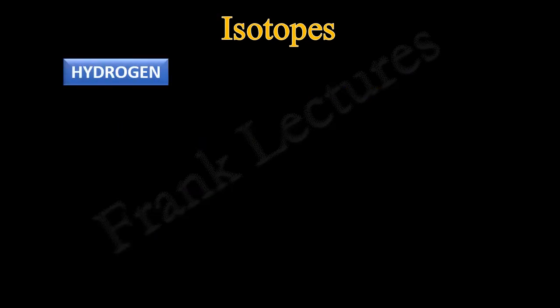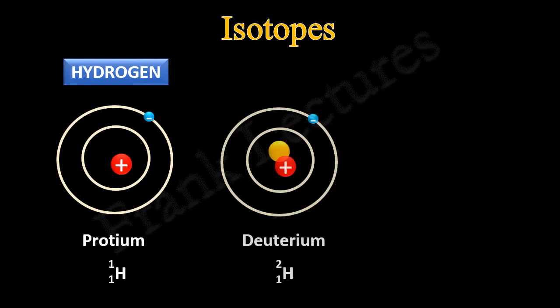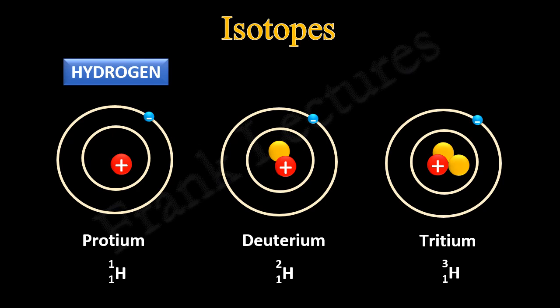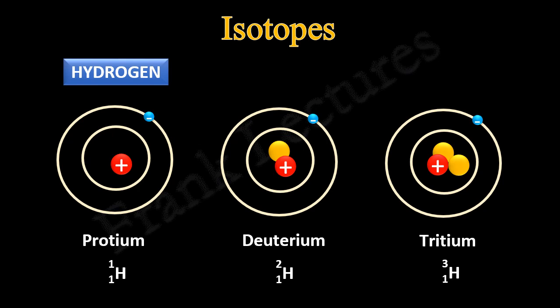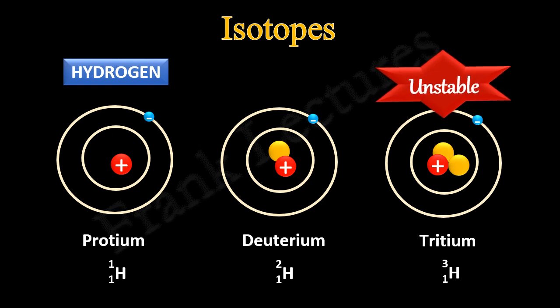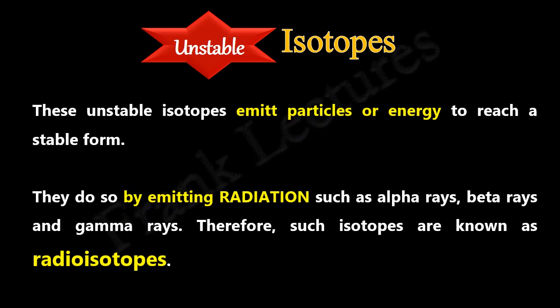For example, hydrogen has three isotopes: protium, deuterium, and tritium. No neutron is present in protium, one neutron is present in deuterium, and two neutrons are present in tritium. The first two isotopes — protium and deuterium — are stable, but the third isotope, tritium, is unstable. These unstable isotopes emit particles or energy to reach a stable form; they emit radiations such as alpha rays, beta rays, and gamma rays. Therefore, such isotopes are known as radioisotopes.